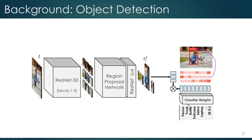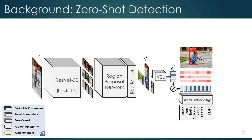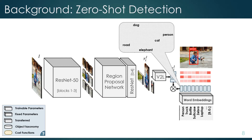Each column of this weight matrix can be seen as a class prototype, which is randomly initialized and trained with the rest of the network. In zero-shot learning models, the key idea is to replace these classifier weights with pre-trained word embeddings and fix them during training, because the pre-trained word embeddings have already learned a good representation for each class.